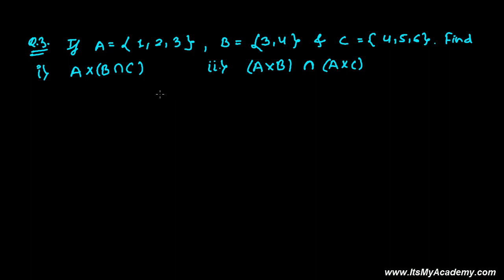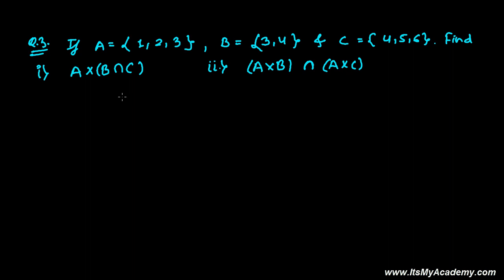Hello my dear friend, here we have a third exercise question completely based on the concept of Cartesian product. We have three different sets: A containing elements 1, 2, 3; B containing element 3 and 4; C containing elements 4, 5, and 6. We need to find the Cartesian product of set A and set B intersecting C. In the second question, we need to find the set where the first set is A cross B and the second set is A cross C.